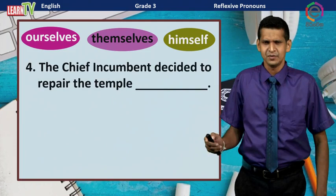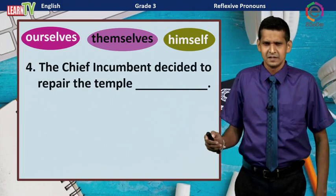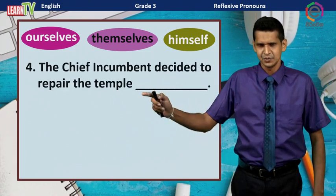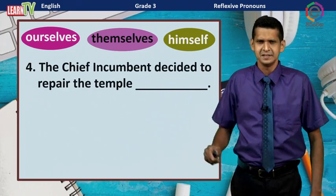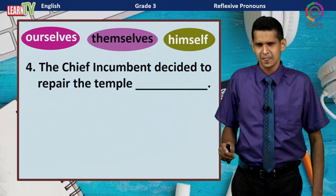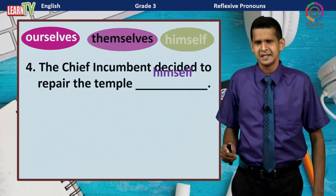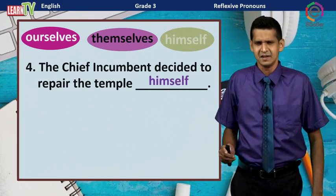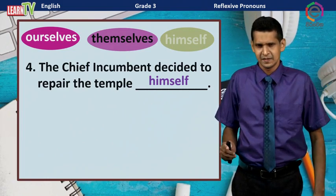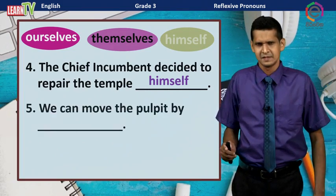Question number four: The chief incumbent decided to repair the temple ___. The answer is 'himself.' The chief incumbent decided to repair the temple himself.